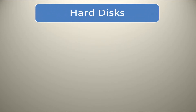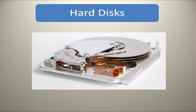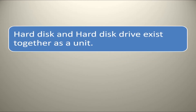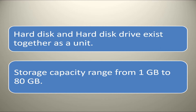Let us learn about hard disks. These are made up of rigid material and are usually a stack of metal disks sealed in a bus. The hard disk and the hard disk drive exist together as a unit and is a permanent part of the computer where data and programs are saved. Storage capacity of these disks ranges from 1GB to 80GB and more. Hard disks are rewritable.